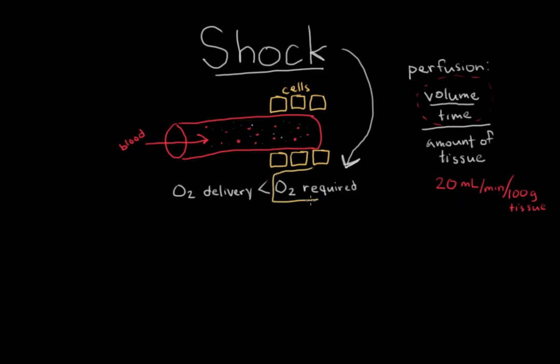Now we know that cells require oxygen. And though there are things that can increase or decrease the amount of oxygen required by cells—for example, if you're exercising, you're going to have an increased need for oxygen, increased oxygen requirement—when we talk about shock, we mostly focus on this oxygen delivery. So let's take a look at oxygen delivery through the cardiovascular system.